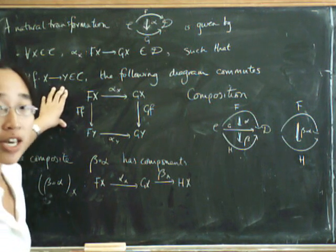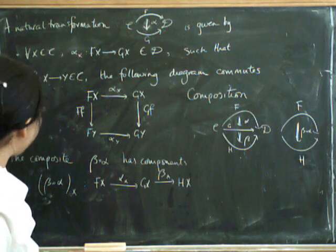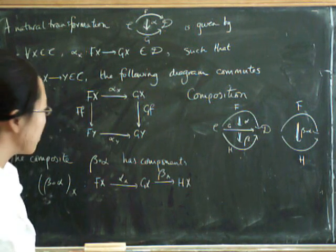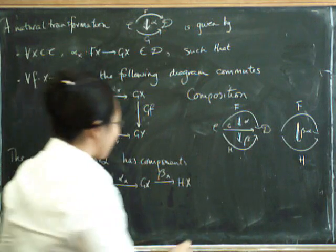So what do we have to do now? We have to check that it's really natural, which means that for every morphism in C, this kind of square has to commute. So what's that diagram going to look like?